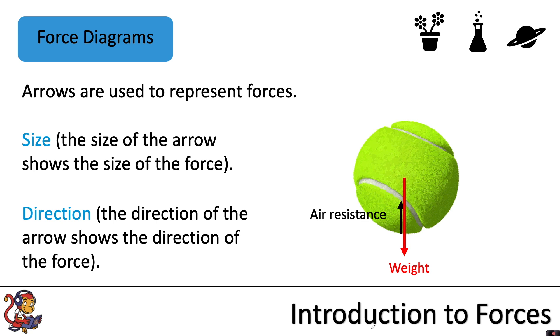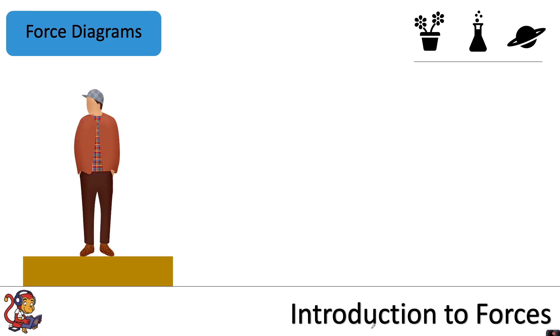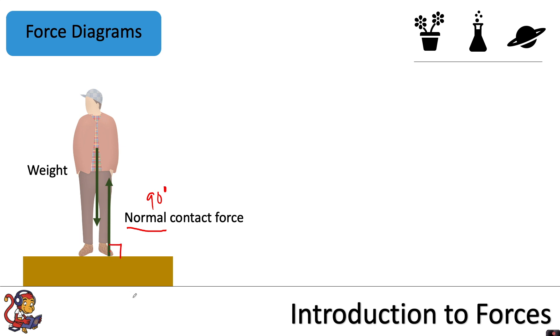So don't worry too much about the two different diagrams. The most important thing is that you're naming the correct forces and using arrows. So if we look at the forces acting on the person, you've got weight pulling the person downwards towards the ground, and you've also got a normal contact force, which acts upwards on the person at the point where the person touches the floor. And this force always acts at 90 degrees to the object.